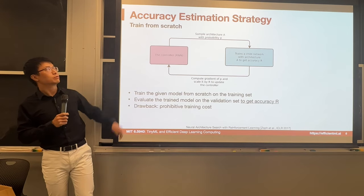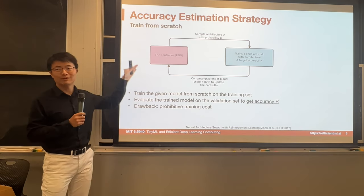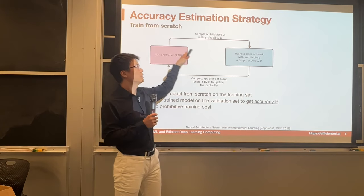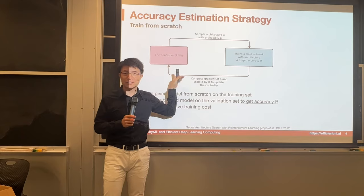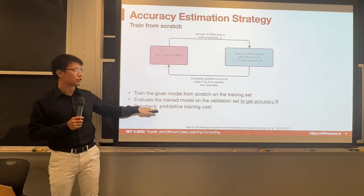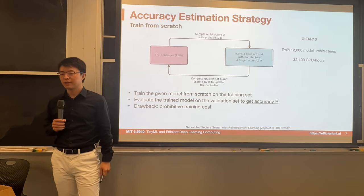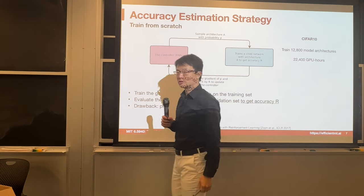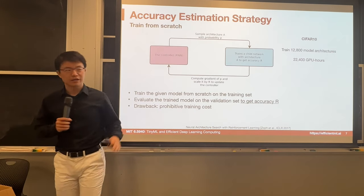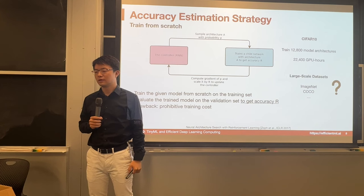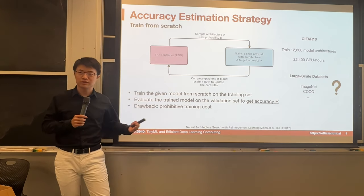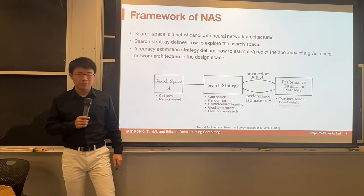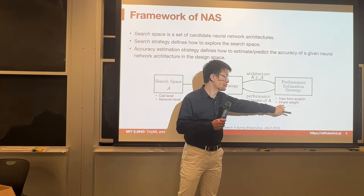The simplest approach is to train the model from scratch and observe the accuracy. The controller proposes an architecture, we train it, obtain the accuracy, and update the controller. The drawback is prohibitive training cost. For example, on CIFAR-10, people had to train 12,000 models to find the best one, taking 22,000 GPU hours. Scaling this to larger datasets like ImageNet or object detection is extremely expensive. So people proposed all kinds of lighter-weight methods to efficiently search architectures.